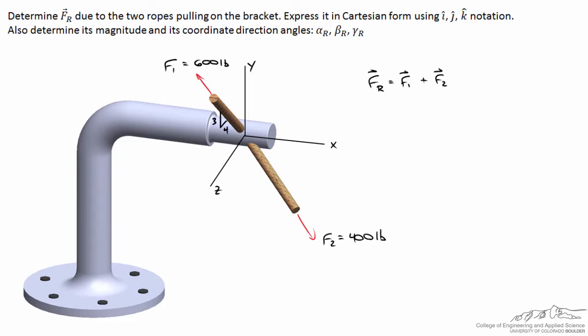We know a couple of things about rope two as well. It's not in any one coordinate plane like rope one, but we do know the angle between the y axis and the rope is equal to 120 degrees, and we also know the angle between the z axis and the rope is equal to 60 degrees.